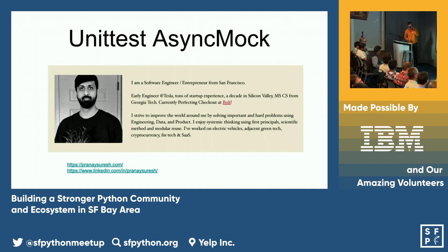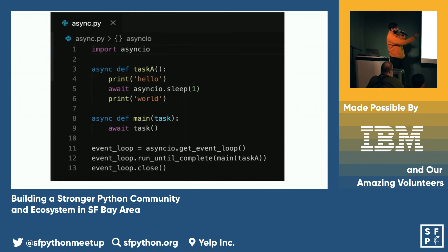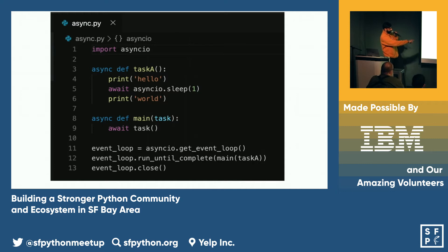This is an interesting talk about unit testing with async functions pre-3.8 and then post-3.8. Here's a simple snippet of code — there's a main function that takes a task as an input, the task does something, there's a sleep in between, and then we run it using run_until_complete.